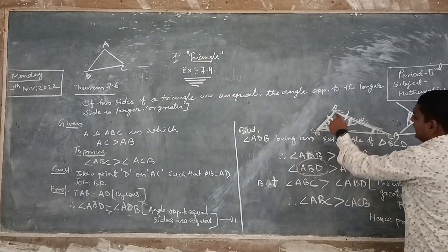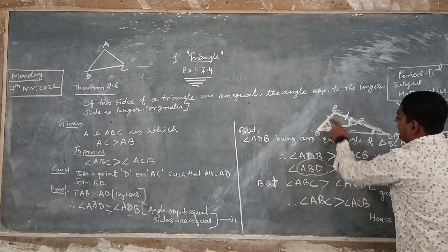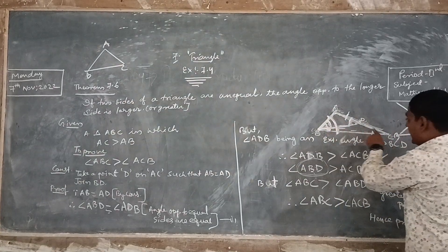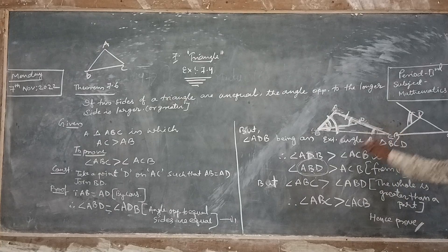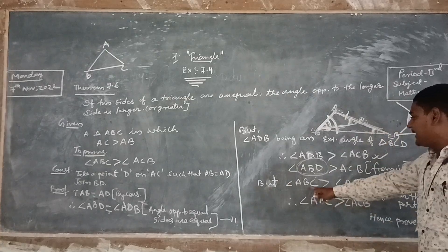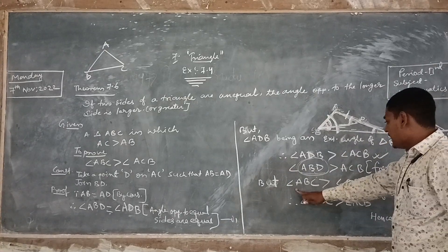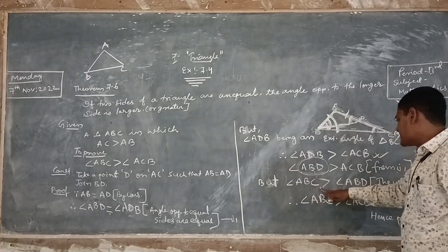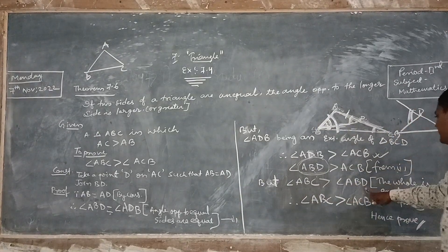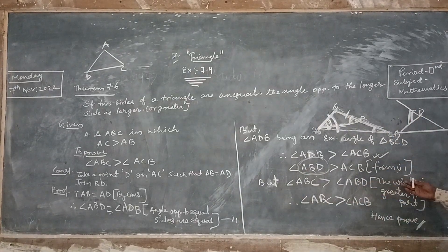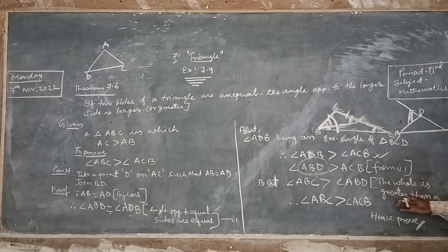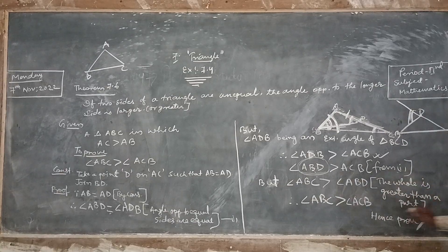So, angle ABC is greater than angle ABD. And since the whole is greater than a part, angle ABC is also greater than angle ACB.